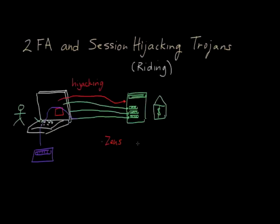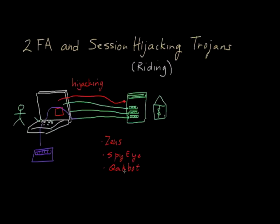During those transactions, it silently withdraws funds from the victim's bank account. Another example is SpyEye, which is very much similar to Zeus in how it siphons off funds from the victim's bank account. There's also one called Qakbot, depending on your pronunciation, which injects itself into popular Windows processes, hooks Windows APIs to monitor a user's activity, and then rides on top of any session a user created with their financial institution — again, even if two-factor authentication was employed.